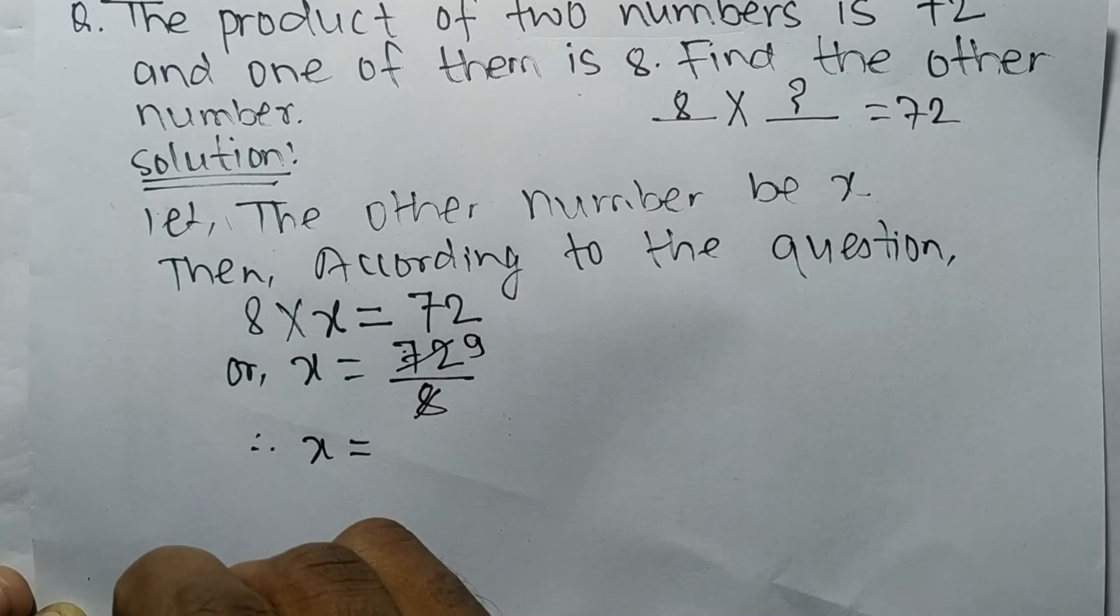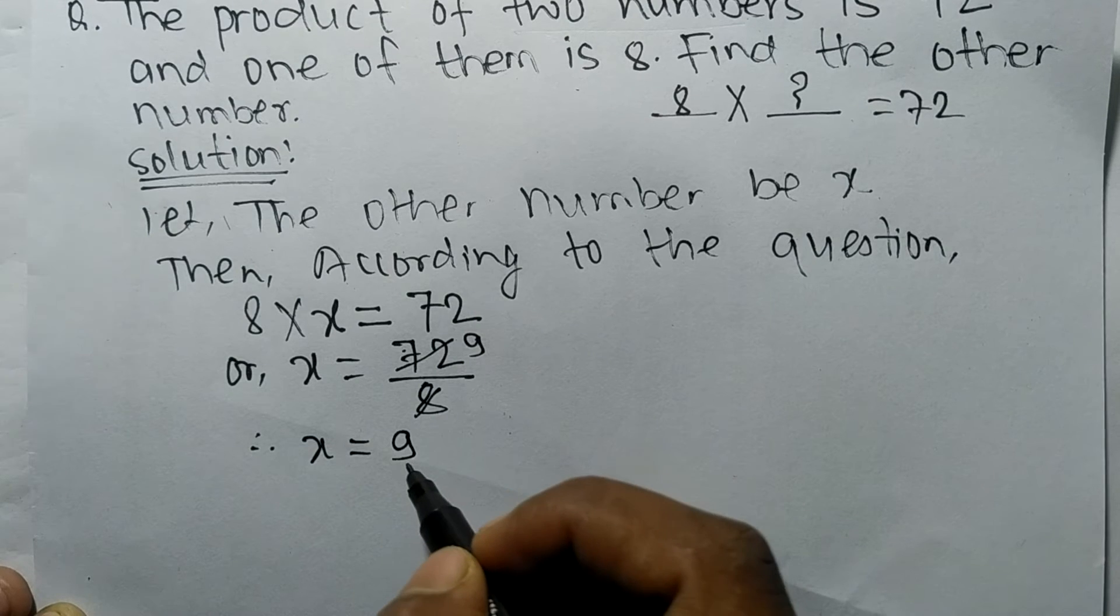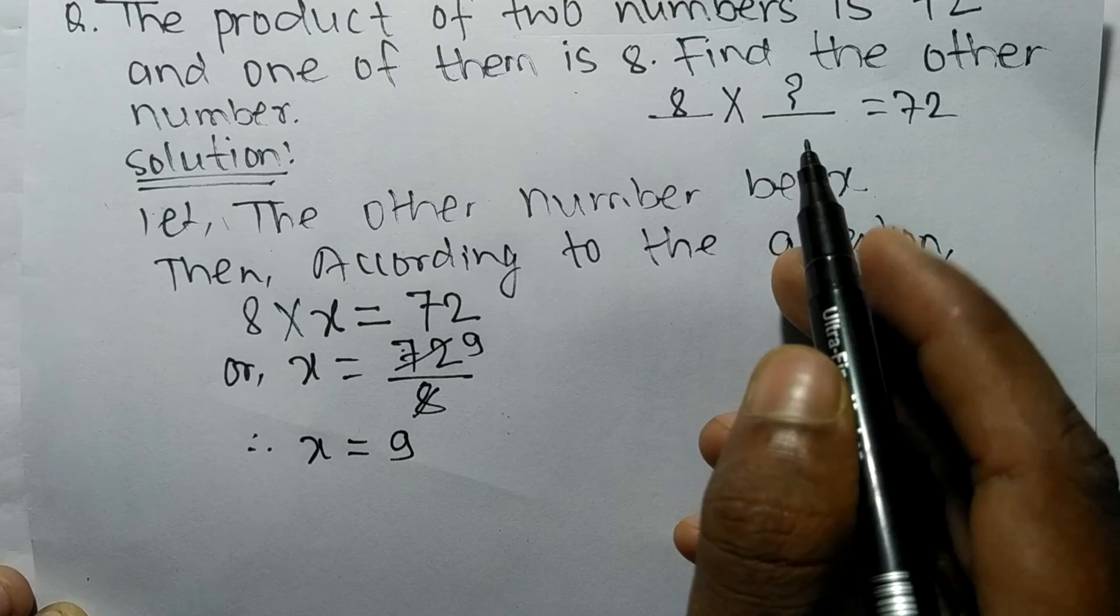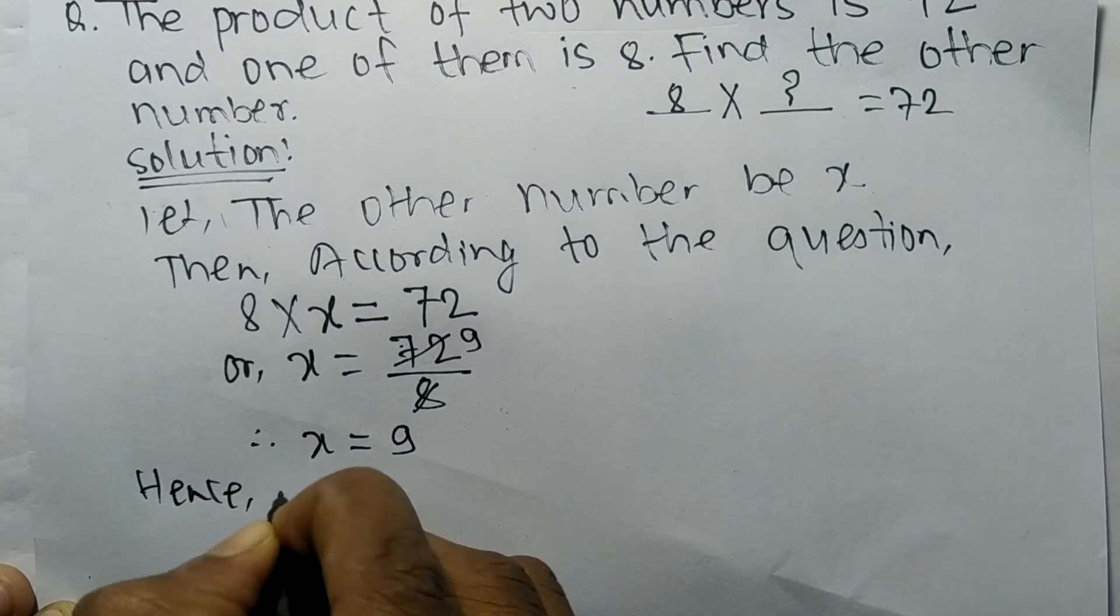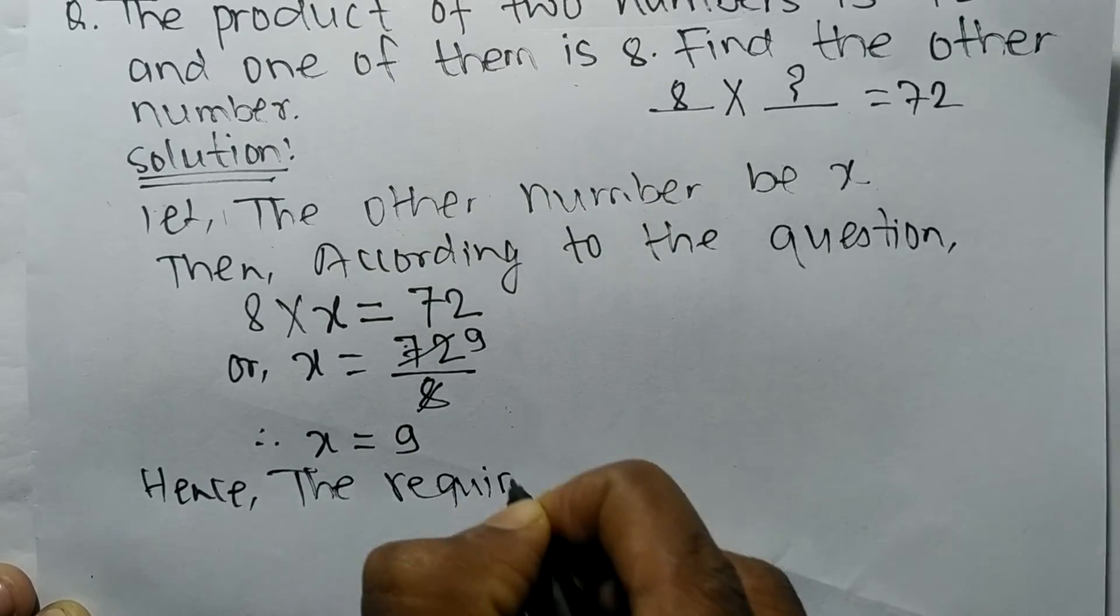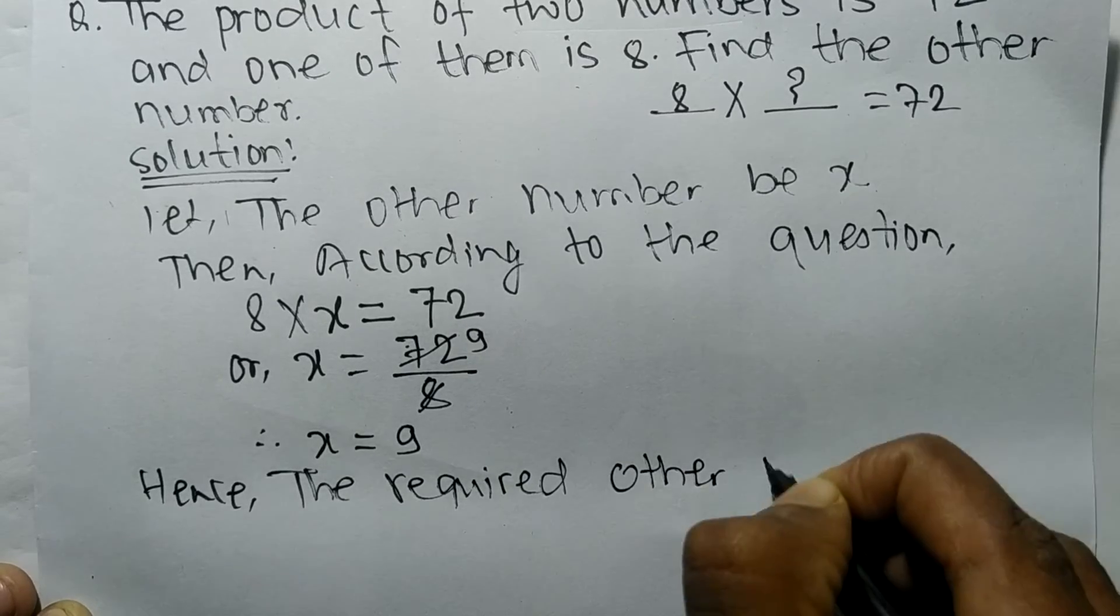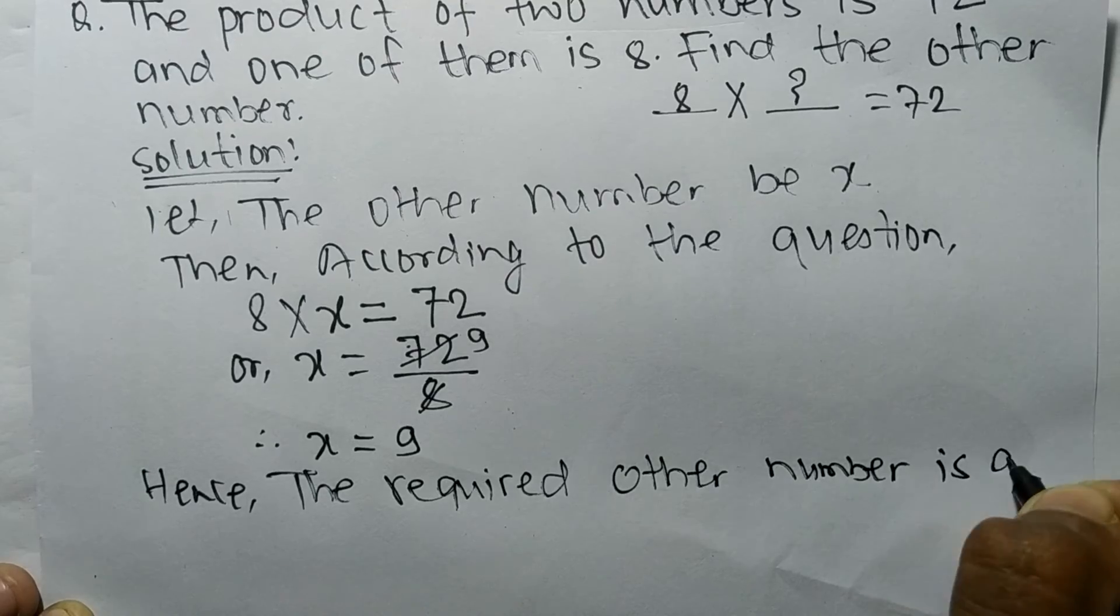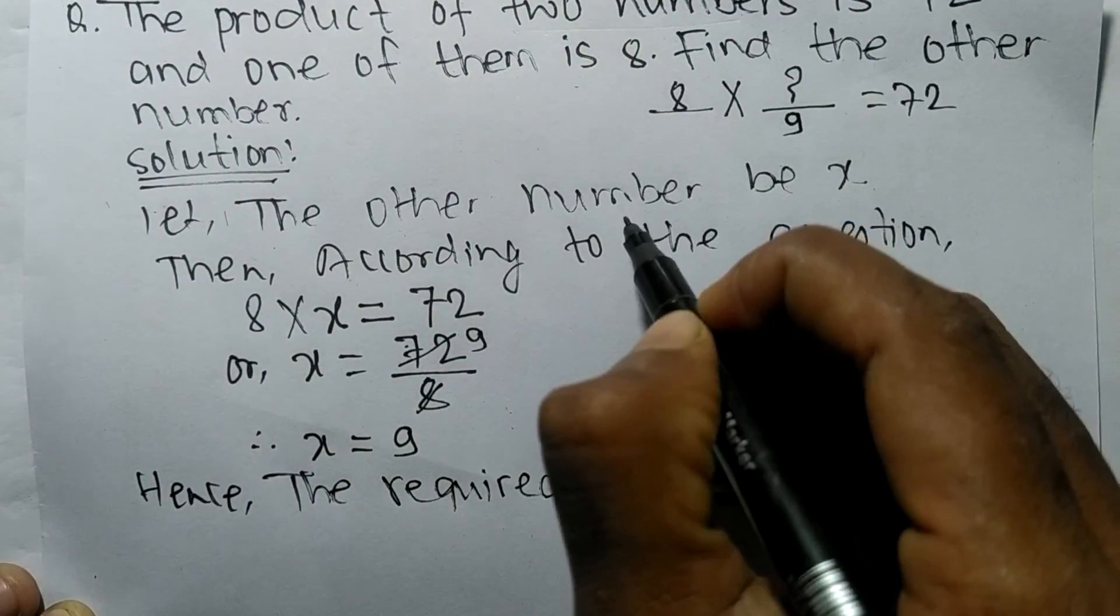So we got the value of x which is 9 and which is our required number also. Hence the required other number is 9, so the required another number is 9.